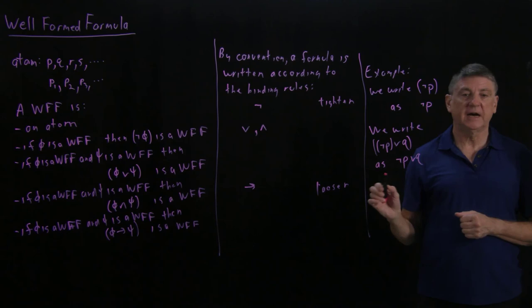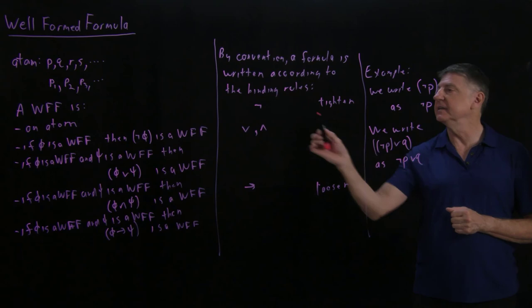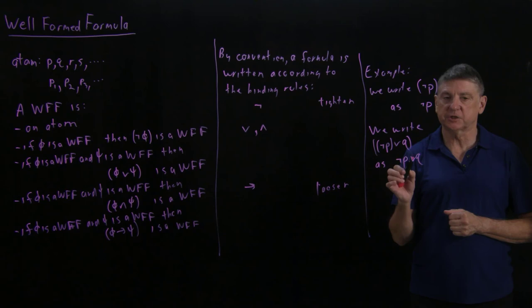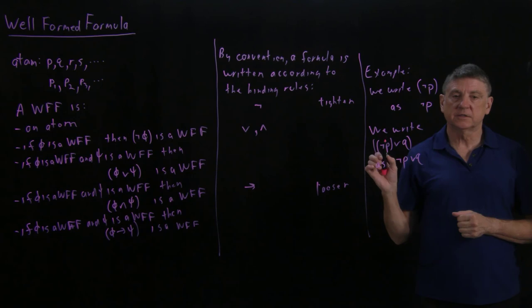So here, the first thing that we do is, because our understanding won't be changed, we'll drop the outside parentheses. And because the understanding is that negation binds tighter than disjunction, we will simply write negation of P disjunction Q, or not P or Q, in place of these.